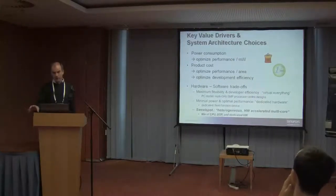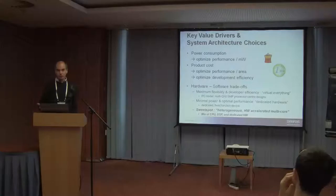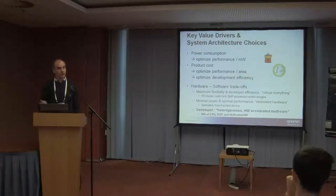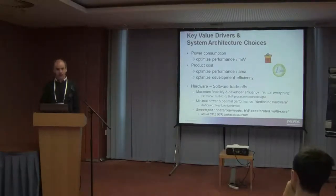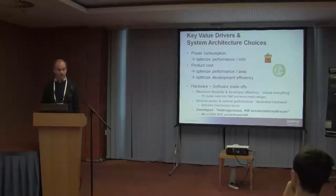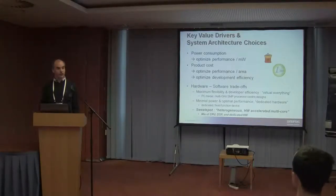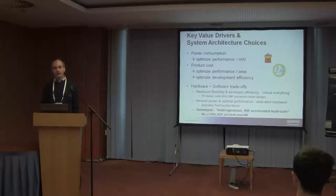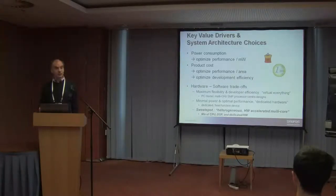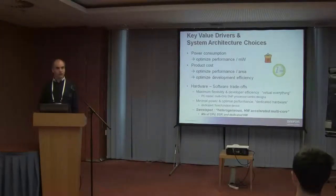For many of those products, there are two key elements that are important. On the mobile side, power consumption — and if you translate that to requirements, it basically means you want to optimize performance per megawatt. On the cost side, it will be optimizing performance per silicon area. But also development efficiency — the system should still be easy to program and easy to use. These requirements lead to hardware-software trade-offs.